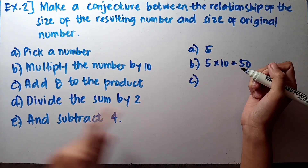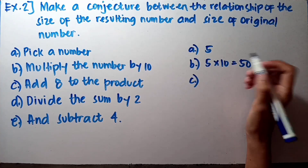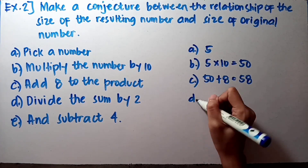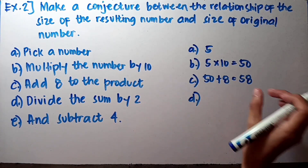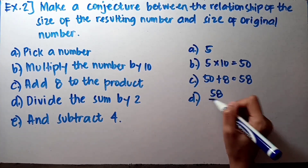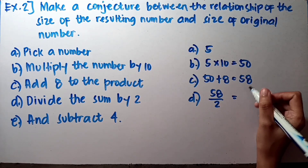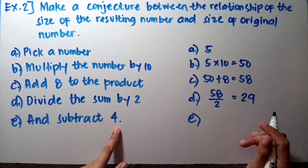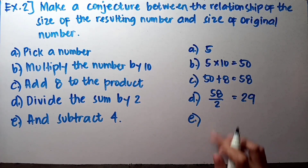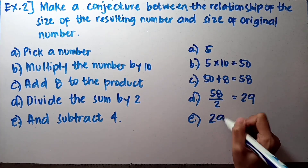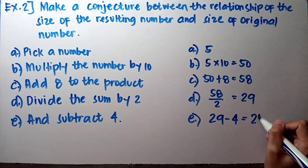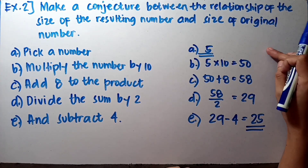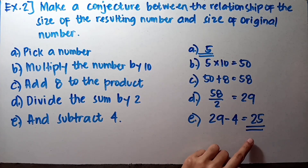Multiply the number by 10: 5 times 10 equals 50. Add 8 to the product: 50 plus 8 equals 58. Divide the sum by 2: 58 divided by 2 equals 29. Then subtract 4 from the quotient: 29 minus 4 equals 25. So 25 is our resulting number. Notice that 25 is 5 times the original number 5.